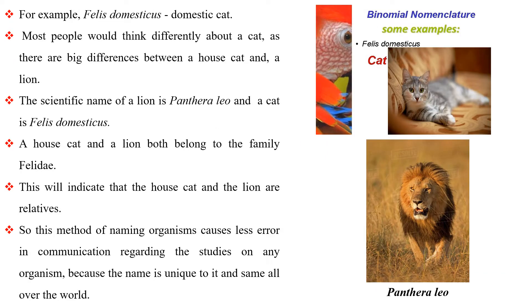For example, Felis domesticus is the domestic cat. Most people would think differently about a cat, as there are big differences between a house cat and a lion. The scientific name of a lion is Panthera leo and a cat is Felis domesticus. A house cat and a lion both belong to the family Felidae. This will indicate that the house cat and the lion are relatives. So, this method of naming organisms causes less error in communication because the name is unique to it and the same all over the world.